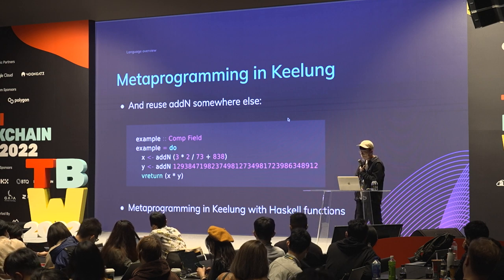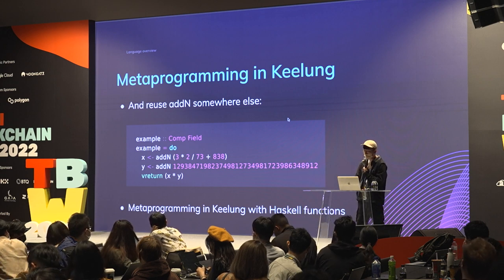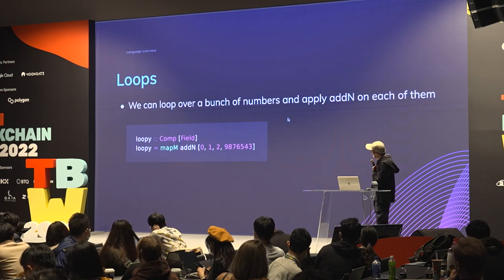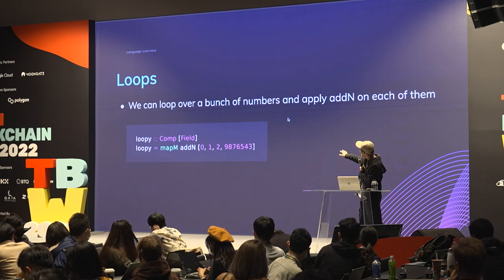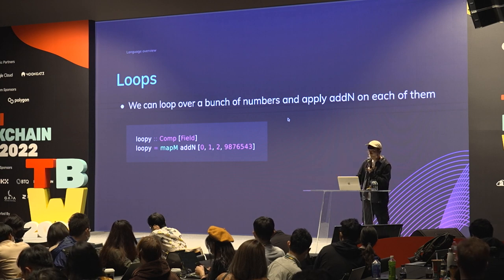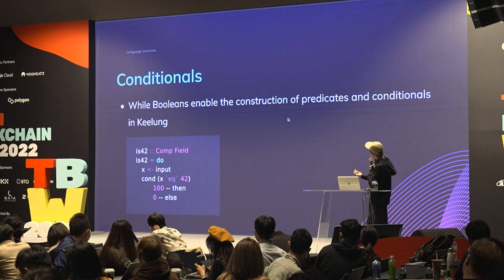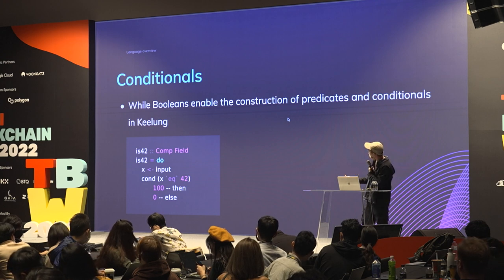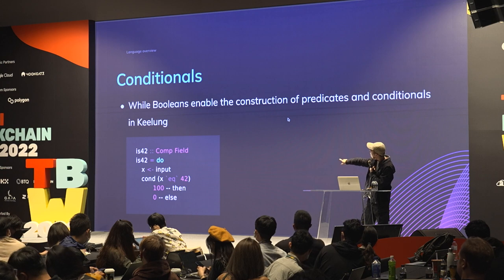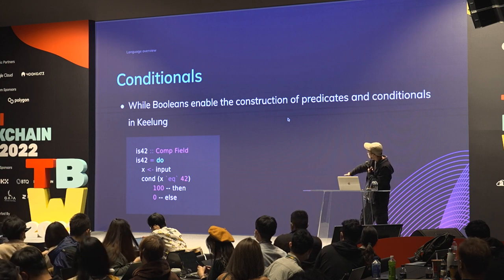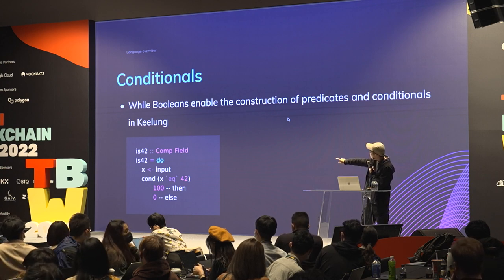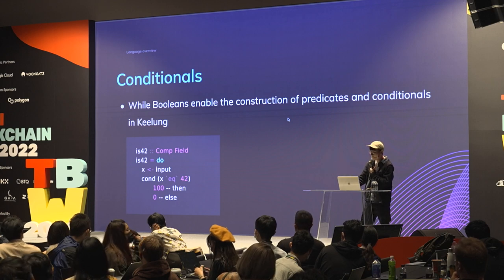For control flow, we can loop over a bunch of numbers using combinators in Haskell — so we have loops. For conditional branches, we can take an input and check if it's equal to 42; if true, output 100, otherwise output zero. So we can do conditionals in Keylong too.